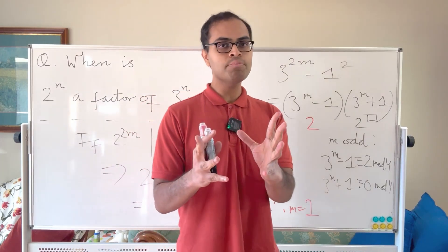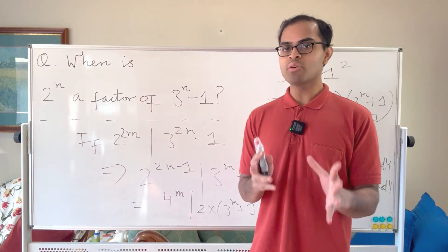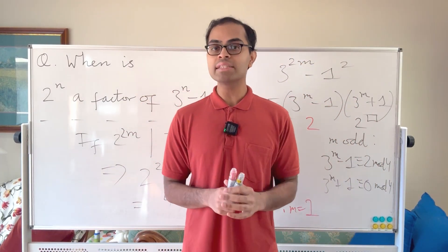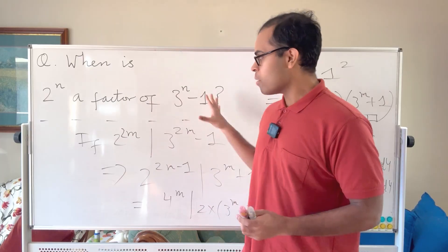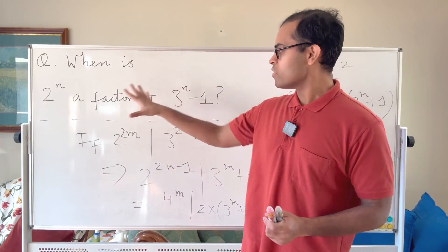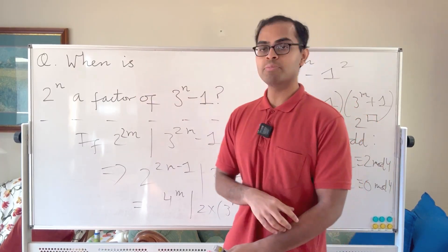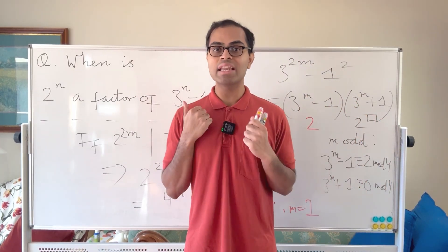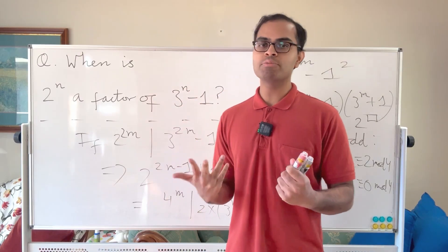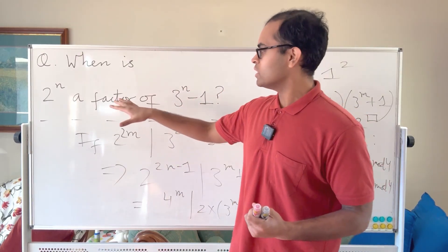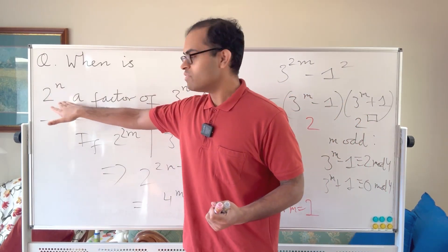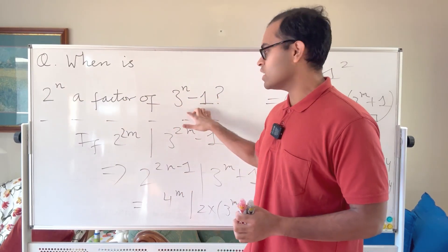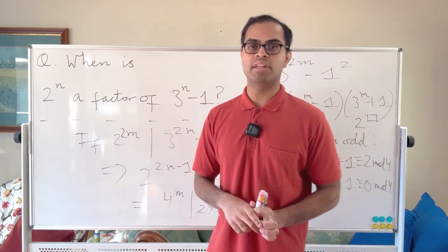If you have other proofs, let me know in the comments. That's a formal proof that 2^n is a factor of 3^n − 1 precisely when n is 1, 2, or 4. It uses the heuristic principle that being divisible by a high power of 2 is very difficult for 3^n − 1.